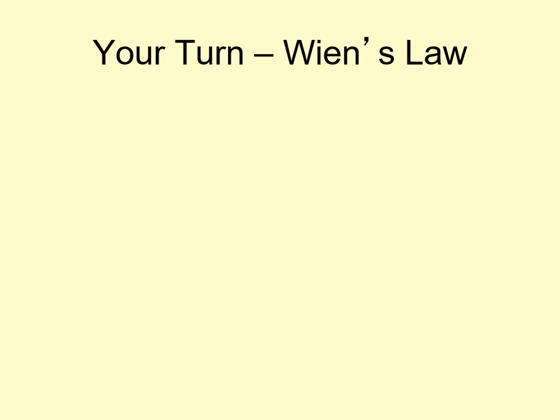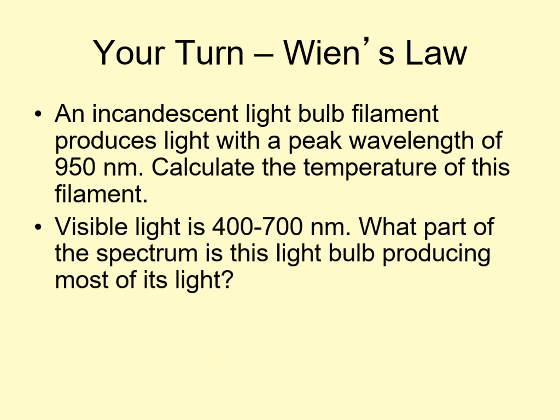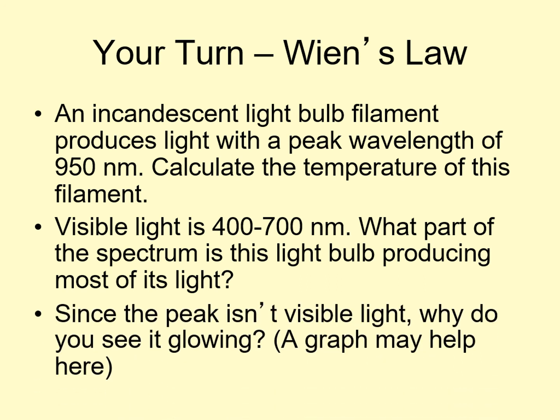Now it's your turn to do one of these calculations. In this case, use Wien's law to calculate the temperature of the filament of a standard incandescent light bulb, the kind that's not very efficient. Remember to include the formula, and show your work. When you're done with that, notice that peak wavelength is not in the visible part of the spectrum, the range from 400 to 700 nanometers. Can you tell what part of the spectrum it is in? Also, since the peak isn't visible, can you explain why we still see it glowing?